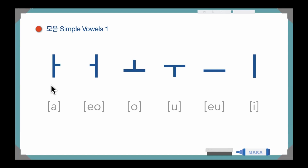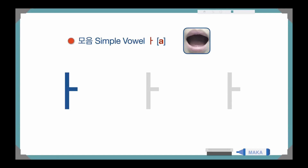Please repeat after me. This is 'a', 'a', 'a'. This one, 'o', 'o', 'o'. And this one, 'o', 'o', 'o'. And 'o', 'o', 'o'. The last one, 'e', 'e', 'e'. Now let's study each vowel one by one.